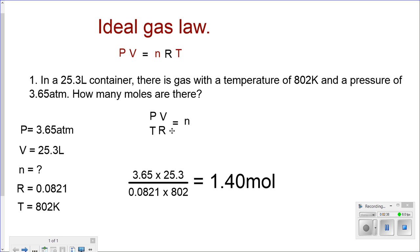I repeat: I had PV equals nRT. Solving for n, I bring my R and my T down to leave n alone. 3.65 times 25.3 divided by 0.0821 times 802 equals 1.40 moles is the answer. I hope this helps you.